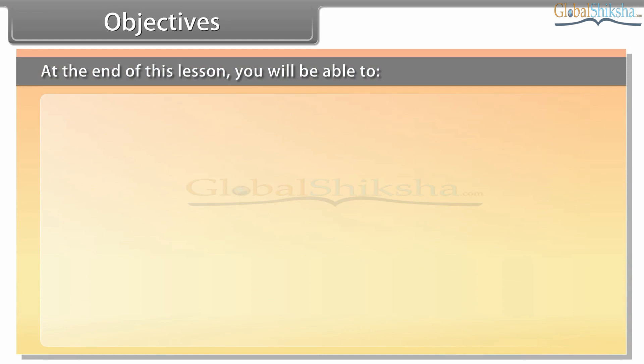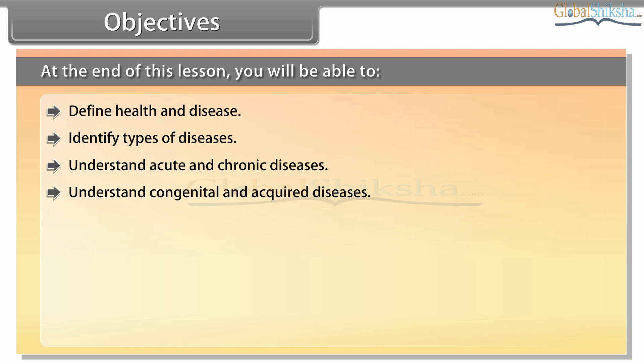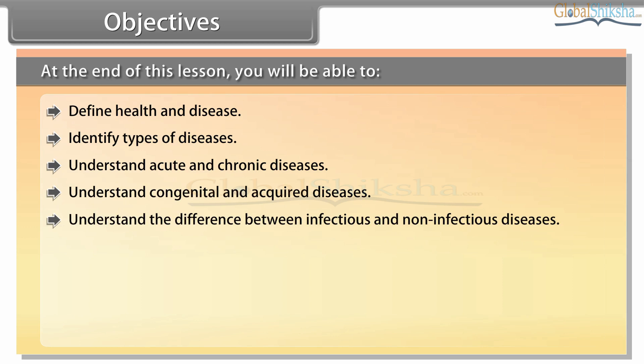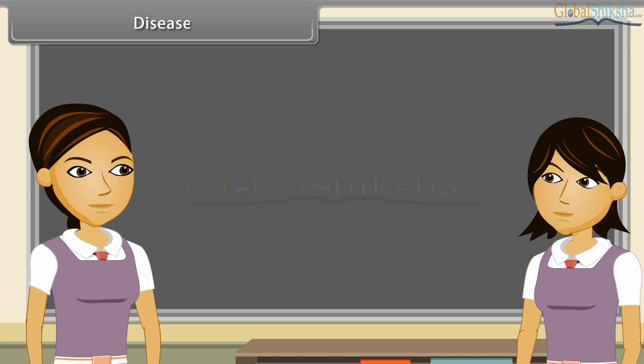At the end of this lesson, you will be able to: define health and disease, identify types of diseases, understand acute and chronic diseases, understand congenital and acquired diseases, understand the difference between infectious and non-infectious diseases, find the symptoms of various diseases, find the principle of treatment, find the principle of prevention of disease, and understand vaccination.